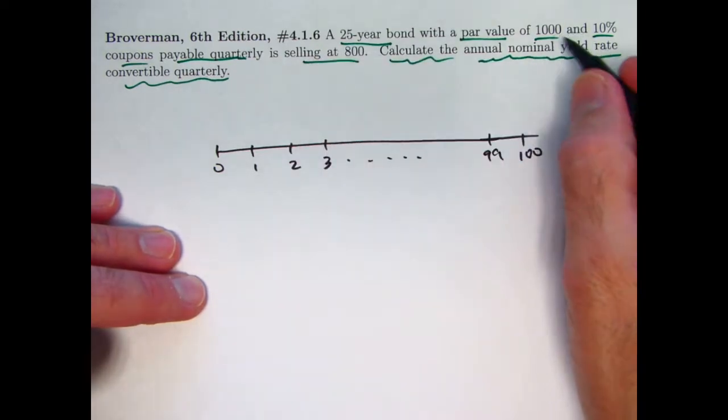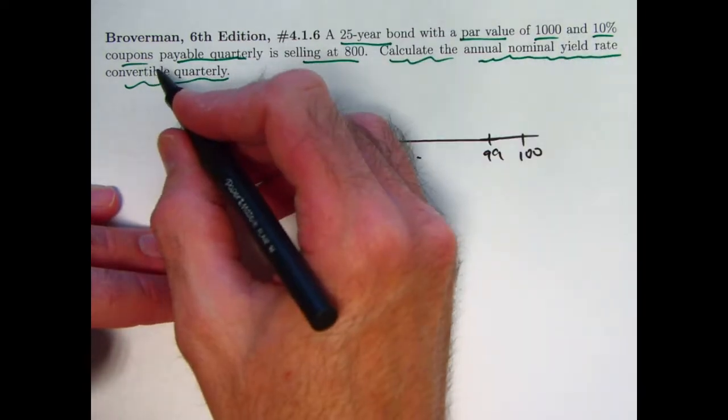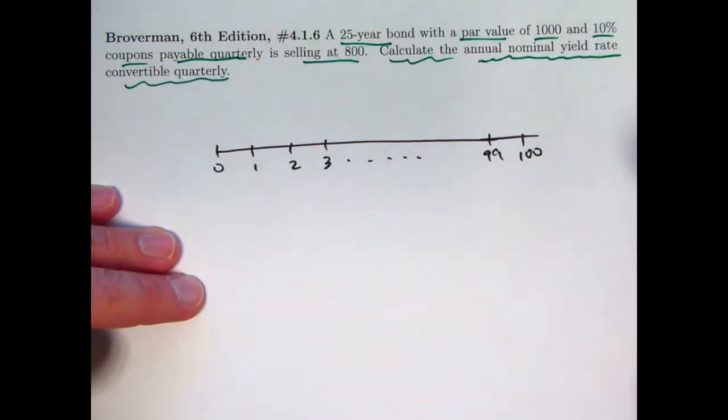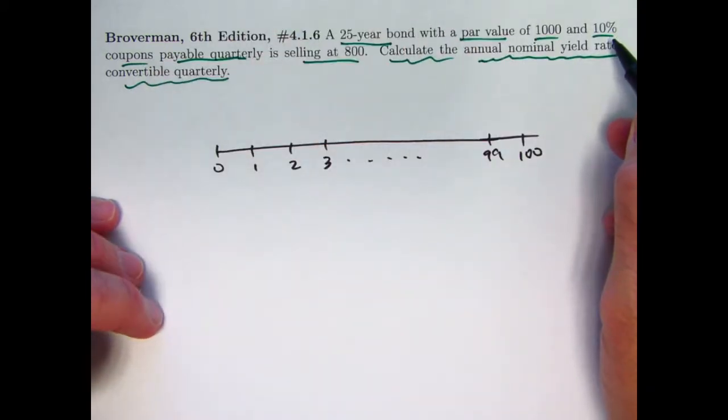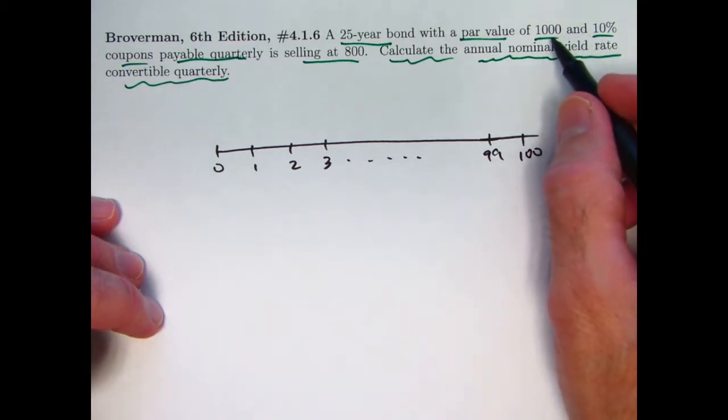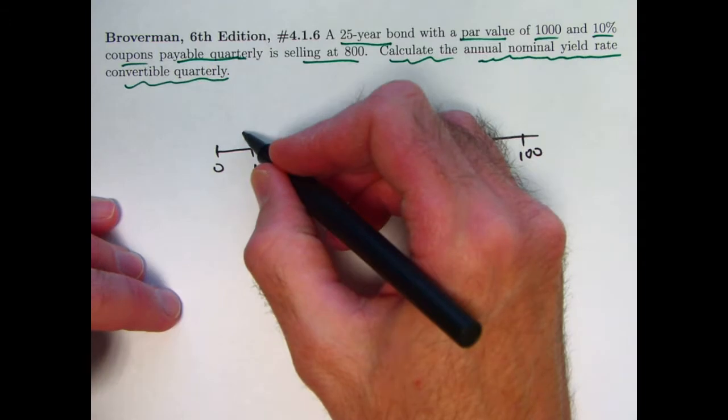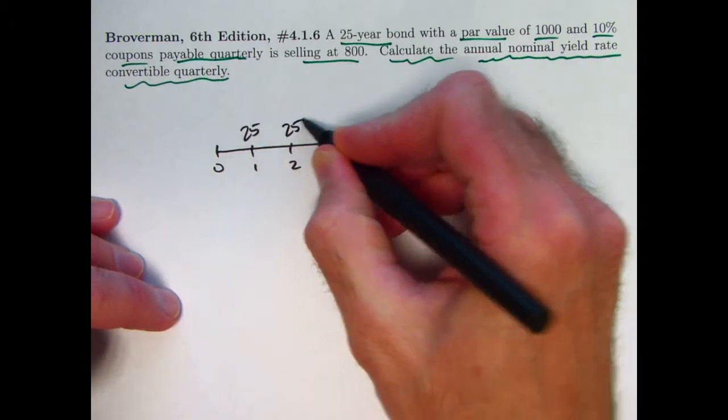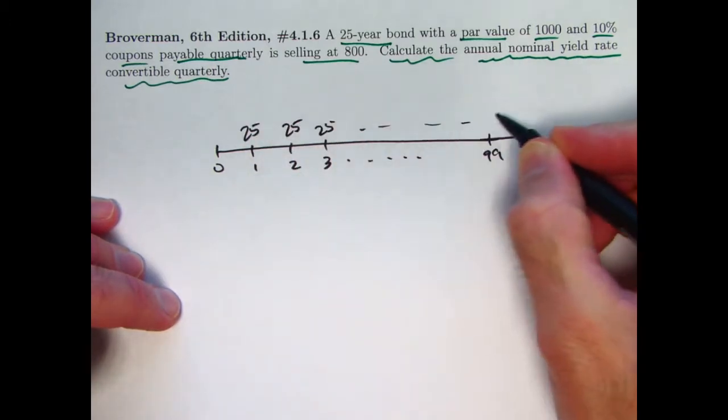The 10% coupon rate is a nominal annual rate. Divide that by 4 to get the quarterly coupon rate of 2.5%, times the face value of 1,000 gives you 25. That's the amount of the coupons, and you've got 100 of those.